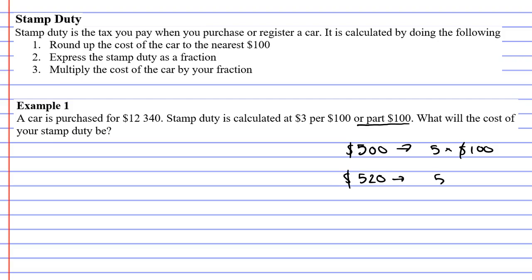That is still five lots of $100 plus a $20 part as well. Now that is called your part $100. That's what that's talking about.